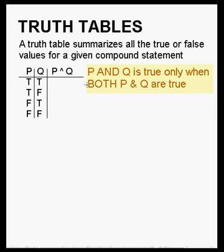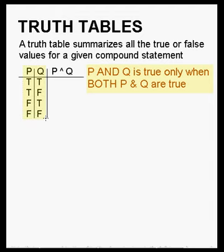We construct the table which always has two columns for the parts of the compound statement. We have a P part and a Q part. We have to list all four different possibilities: when P is true and Q is true, and when P is true and Q is false.